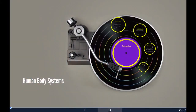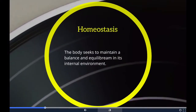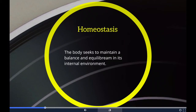Let's take a look at human body systems. We start with homeostasis. Homeostasis is the tendency of the body to seek and maintain a condition of balance or equilibrium within its internal environment, even when faced with external challenges.